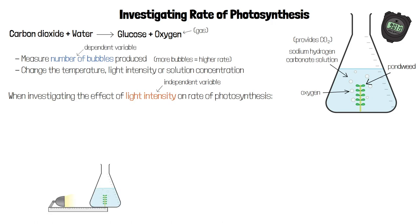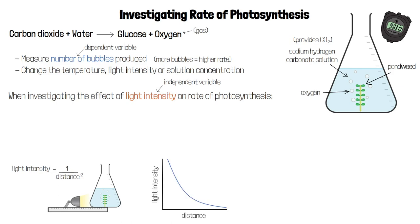We could reduce the light intensity by moving the light source further away from the pond weed, or increase it by moving the light source closer. Remember that light intensity is equal to 1 divided by the distance from the light source squared. This is the inverse square law.